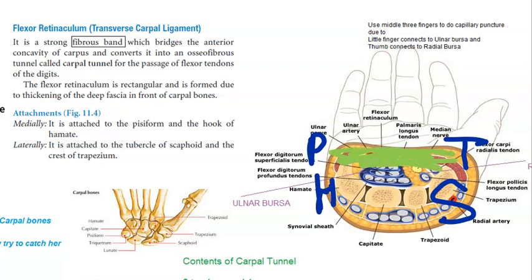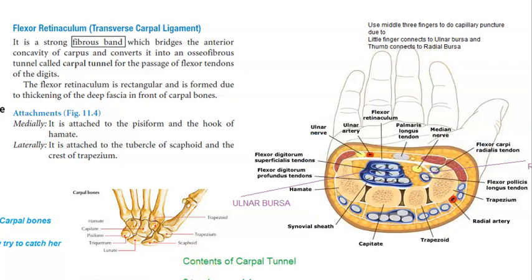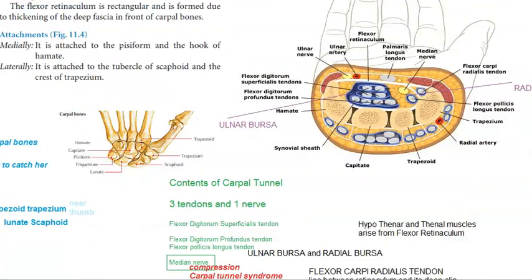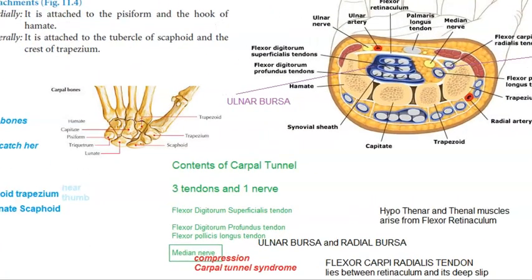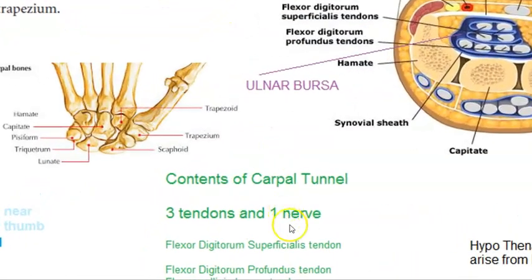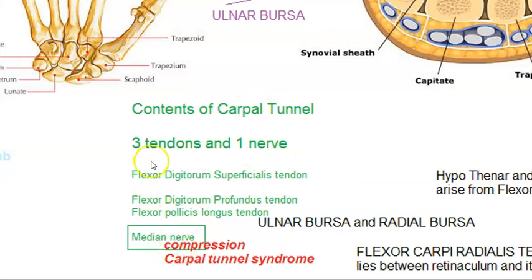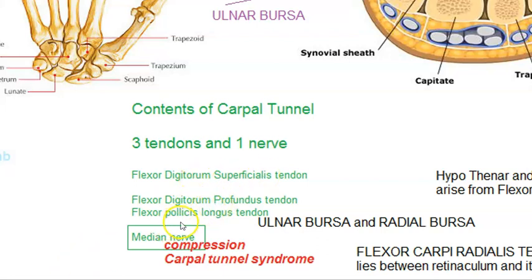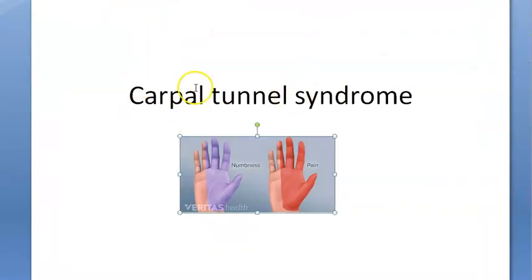The contents of the carpal tunnel: there is one nerve — the median nerve — and three tendons: flexor digitorum superficialis tendons, flexor digitorum profundus tendon, and flexor pollicis longus tendon. Pollicis is for the thumb, digitorum is for the fingers. That is all about carpal tunnel syndrome.